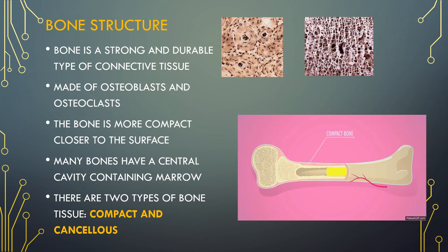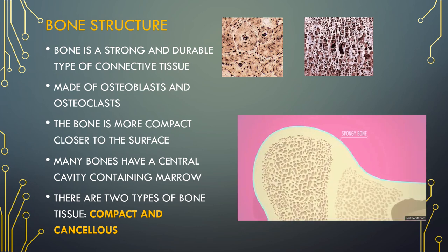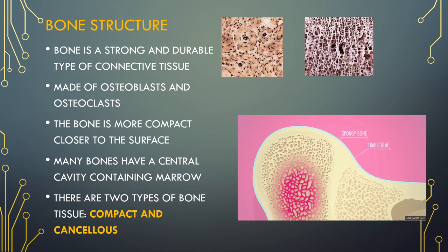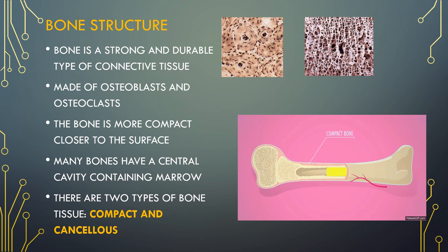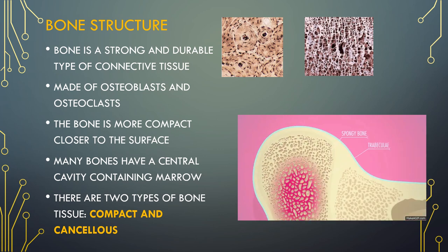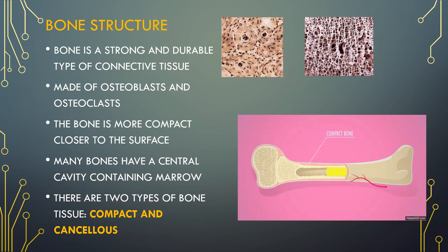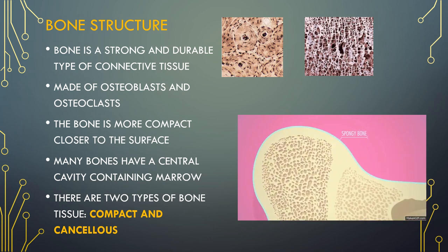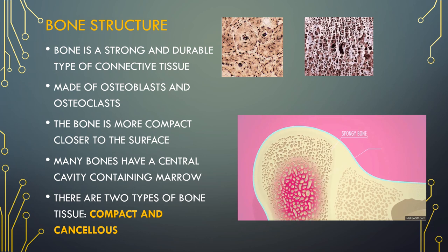Bone tissue differs greatly from other tissues in the body. Bone is hard and many of its functions depend on the characteristic hardness. It is a strong and durable type of connective tissue. It is made of osteoblasts and osteoclasts. Osteoclasts are large cells that dissolve the bone; they come from bone marrow and are related to white blood cells. Osteoblasts are the cells that form new bone; they also come from bone marrow and are related to structural cells. There are two types of bone tissue: compact and cancellous.